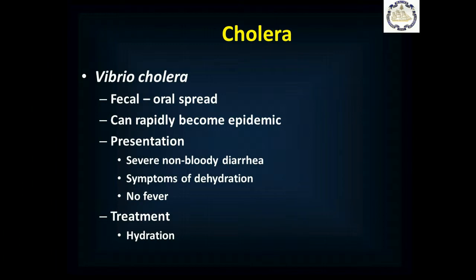Now we'll discuss some common or potentially common shipboard infections — this is not a comprehensive list. Use your textbook, wilderness medicine references, internal medicine or family medicine infectious disease sections, and online resources, and always talk to medical control. Vibrio cholerae is spread by fecal-oral route, typically contaminated water, and can quickly become epidemic. The presentation is severe non-bloody diarrhea with dehydration but no fever. It can be fatal due to dehydration, but as long as you aggressively hydrate the patient, they'll typically do fine.